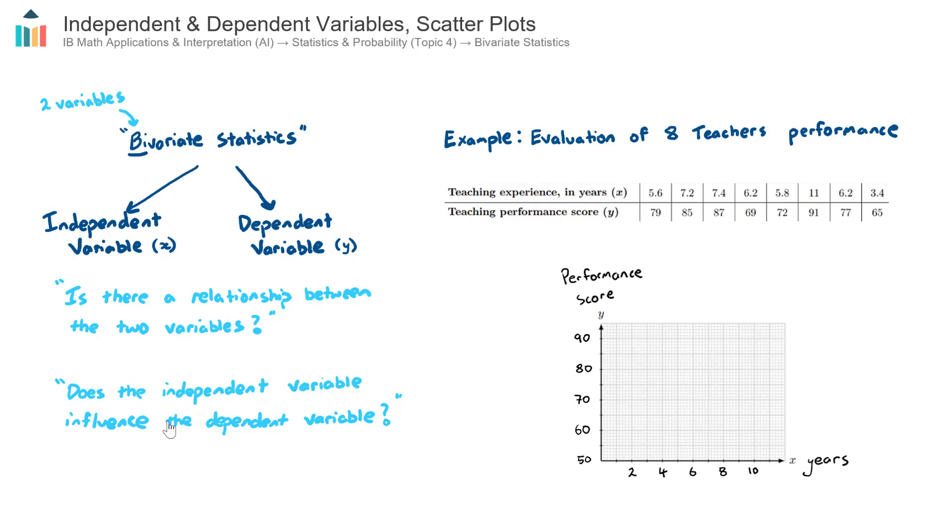Does the independent variable influence the dependent variable? I would think that the number of years they had been teaching for would indeed influence the performance score. But let's see that by plotting these eight points onto our scatter diagram. Before we get into the coordinates, let's talk about the axes. The independent variable will always get the horizontal or the x axis. You can see here that I have determined that the teaching experience is the independent variable. That's independent of any other factor, but the performance score will depend on it. So the teaching experience in years gets the horizontal axis, this x axis, and the teacher performance score gets the vertical axis, the y axis. It's always independent on the x, dependent on the y.